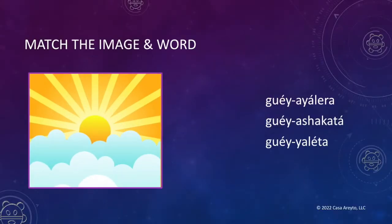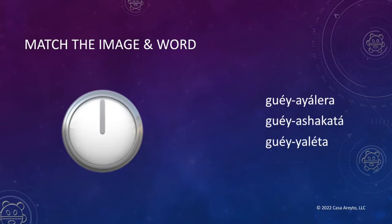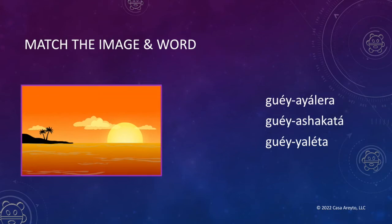Now I want to make sure that you really know these three new words, so let's try to match them with a picture. This picture shows sunrise. Do you remember what sunrise is in Taino? Correct — guayaleta. The clock in this picture shows that it's noon. Do you remember what that is in Taino? That's right — guayaleta. And how about sunset? Correct — guayaxacata.